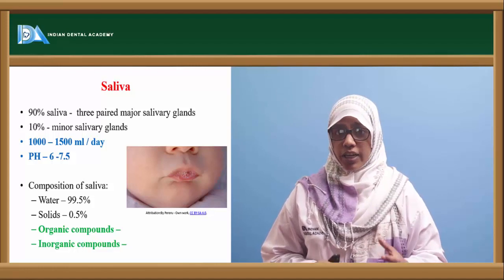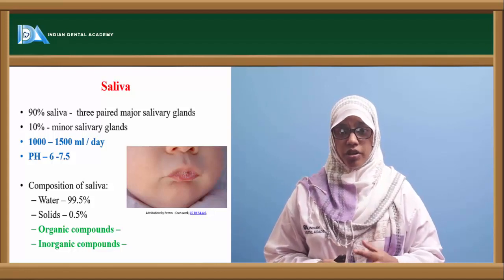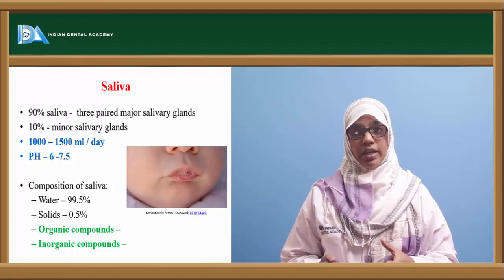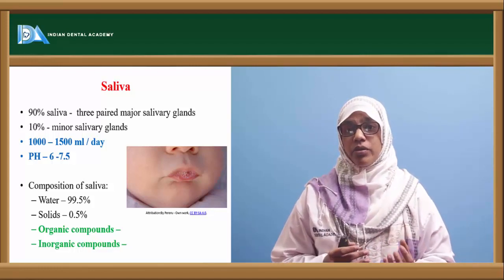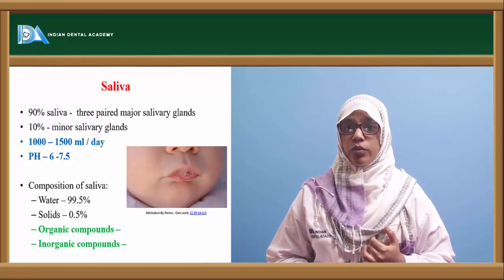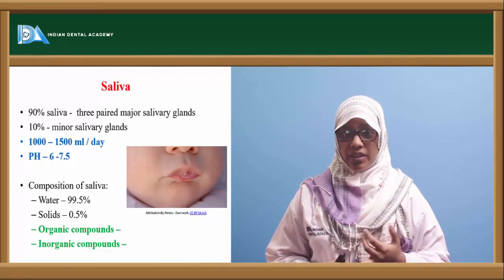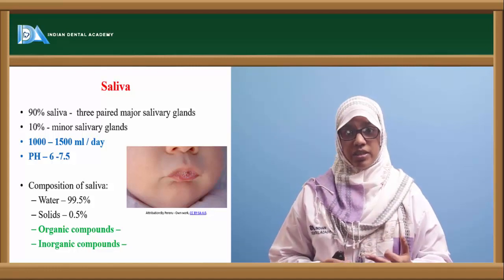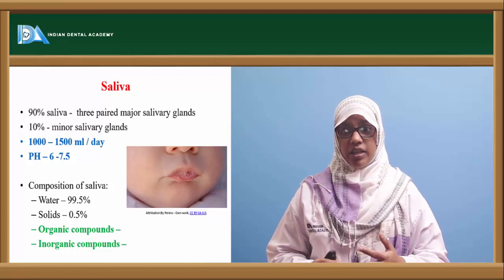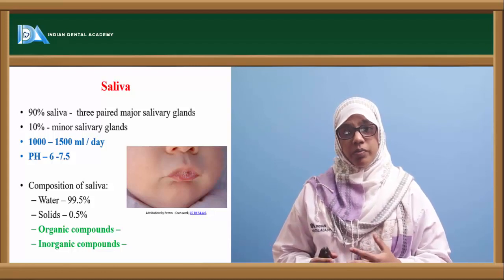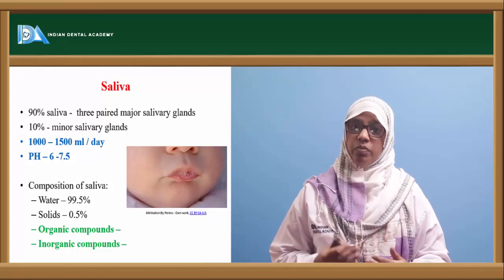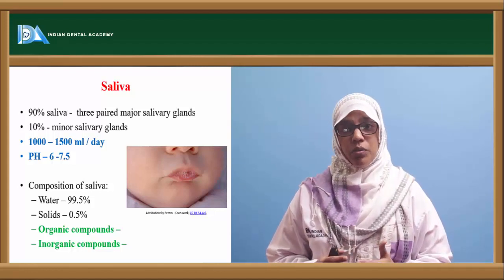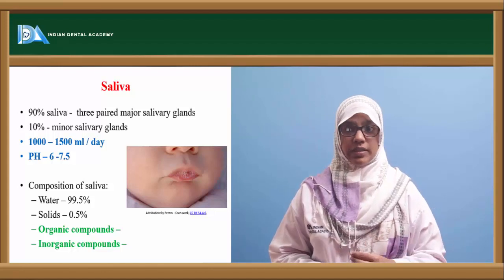Around 1000 to 1500 ml of saliva is secreted per day, and its pH is around 6 to 7.5. It is composed of water (99.5%) and solids (0.5%), containing both organic and inorganic compounds. Organic compounds include salivary proteins, salivary enzymes, immunoglobulins IgG and IgA. Glucose is not present in normal people but is present in diabetics. Inorganic compounds like bicarbonate, sodium, potassium, calcium, and phosphorus are also present.